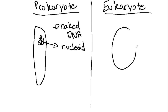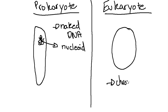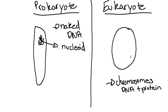In eukaryotic cells, on the other hand, we've got chromosomes. These chromosomes are not just made up of DNA — they're made up of DNA and protein. Instead of just floating about in the cell like we see in prokaryotic cells, the chromosomes are found in the nucleus. This nucleus is bound by a nuclear membrane, as we see here.